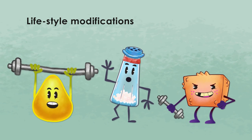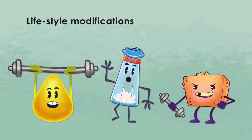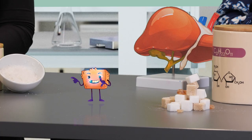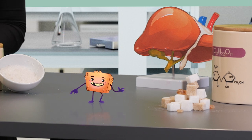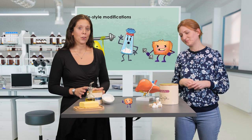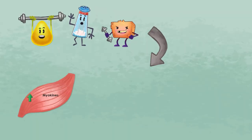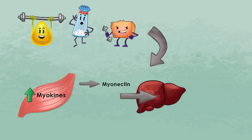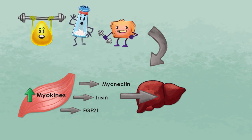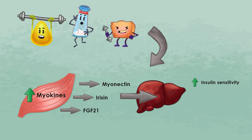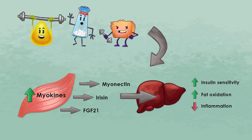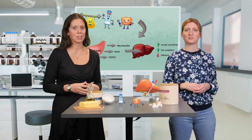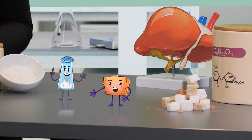When we think of lifestyle modifications, it is beneficial to use certain diets and, of course, to move our body. It is well known that when we exercise, our muscles secrete myokines — small proteins released by the skeletal muscles in response to contractions. Some of the myokines have an effect on the liver, such as myonectin, irisin, and FGF21. Once in the liver, these myokines have protective effects against NAFLD, such as enhancing insulin sensitivity, fat oxidation, and reducing inflammation. We can clearly see the positive and direct effects of physical activity on the liver.